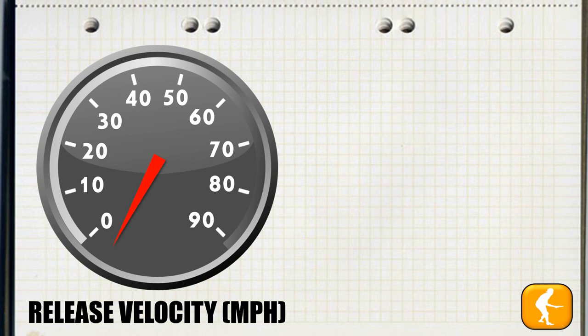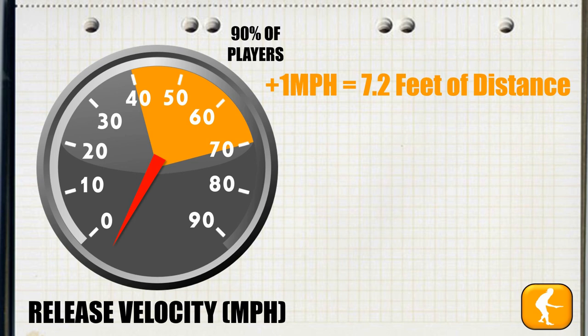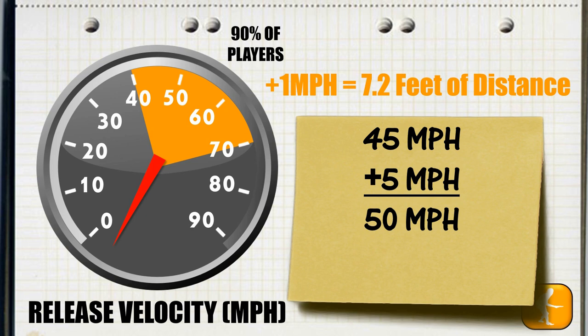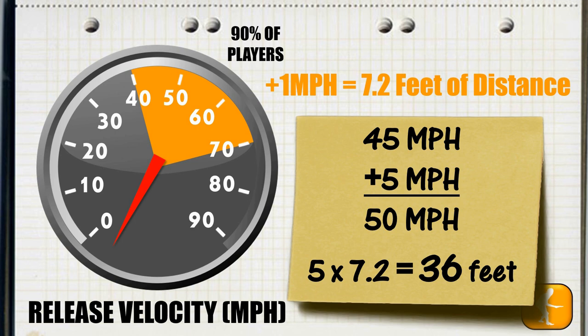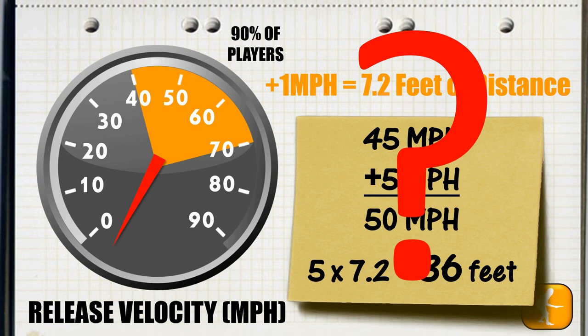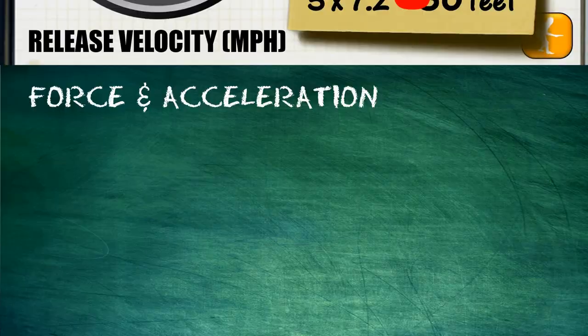When you take a close look at the data, what you'll see is that at a release velocity between 40 and 70 miles per hour, which covers about 90 percent of players, one additional mile per hour of speed on average yields 7.2 feet of additional distance. So for example, if you have a player throwing 45 miles an hour and they add 5 miles an hour to their release velocity up to 50 miles an hour, they're going to add an average of 36 feet to their flight. Now this is great intellectual data, but what you may be asking yourself is how do I actually get the incremental 5 miles per hour in release velocity so I can realize the additional distance.